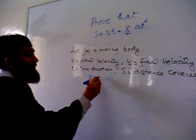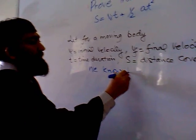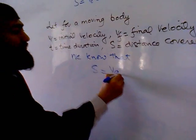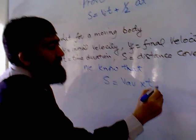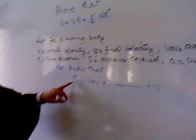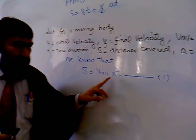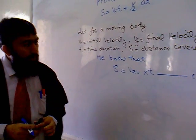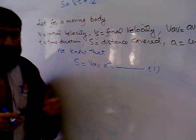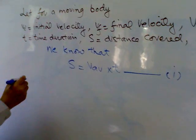We know that s = v_average × t. Distance is equal to average velocity multiplied by time. We just put the value of v_average here in equation number 1.